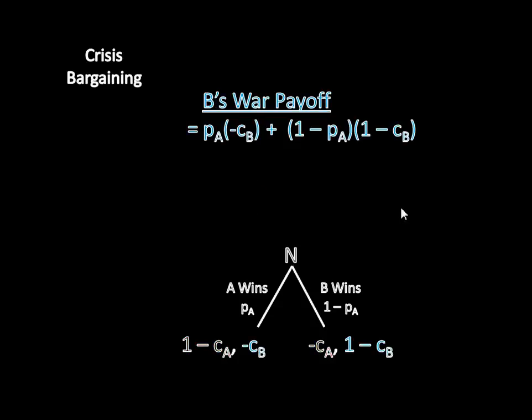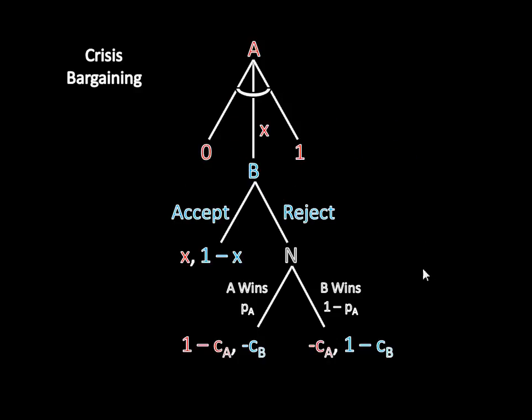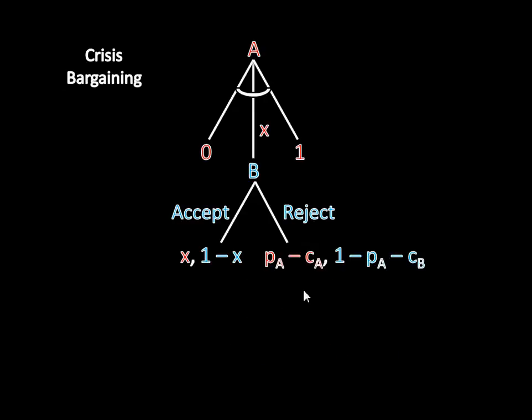We can do the same thing for B's war payoffs. If B loses the war, which happens with probability pA, then B gets this payoff, negative cB. And then you add that to what happens when B wins. So B wins with probability 1 minus pA, and gets a value of 1 minus cB. And you do some simplification there, and you get to an overall war payoff of 1 minus pA minus cB for B. Again, this is exactly what we've seen before. Nothing should be too surprising. So we can take this information. We had nature here originally. We can truncate nature's move and just replace those expected utilities that we saw before. And that's what we've done here.